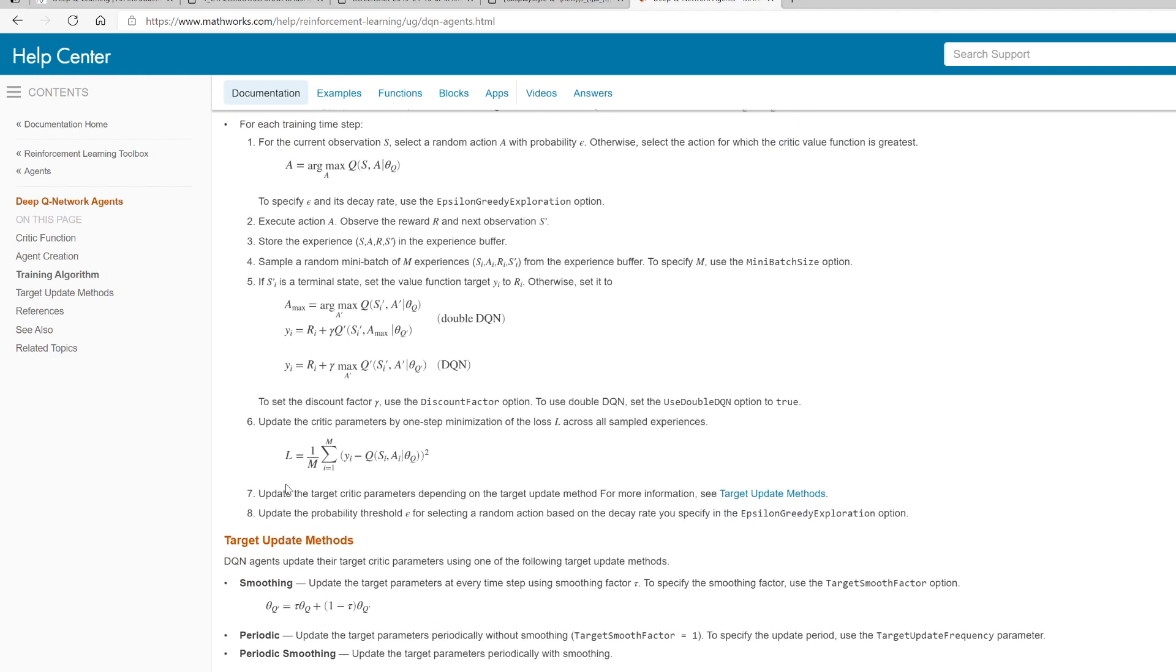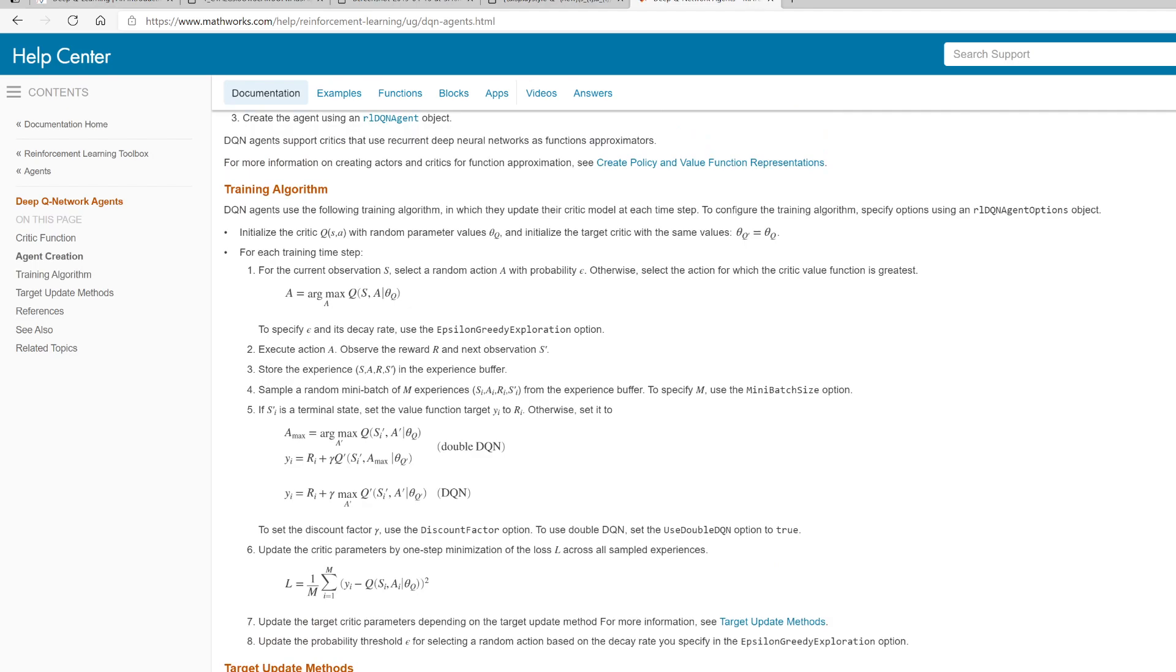After you perform this update, you can update the target network depending on how you want to update it. There are different ways of updating it. Some people like to perform a smooth update where you gradually update it towards the main network, or you can directly copy over all the parameters. It's just how you want to go about it - these are different ways of stabilizing your network. This is basically the Deep Q-Learning algorithm. We will see how to implement this in Reinforcement Learning Toolbox. The good thing about the toolbox is we don't care about how to implement these things. All we care about is designing our Q network and specifying the parameters of replay buffer and all those other things. That's all we need to do. The toolbox takes care of everything else. That's the great part about this Reinforcement Learning Toolbox.